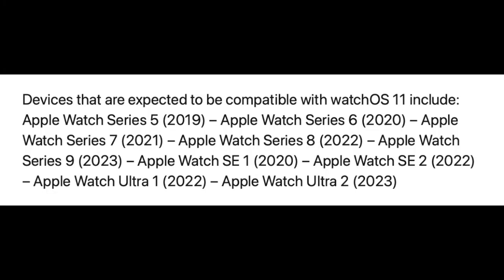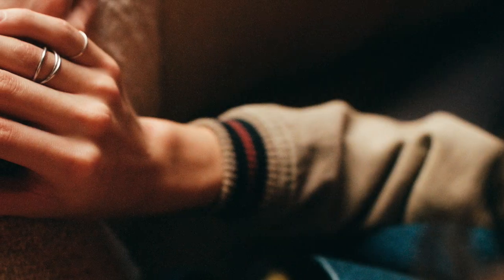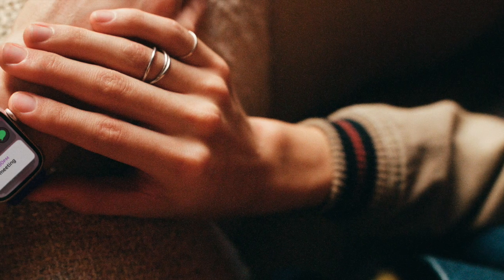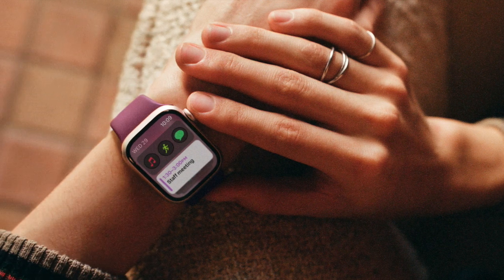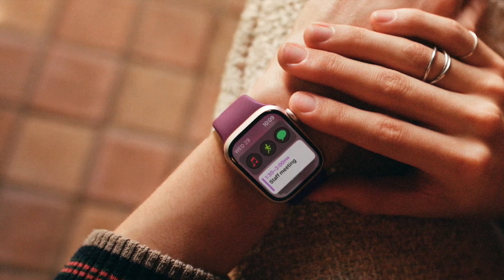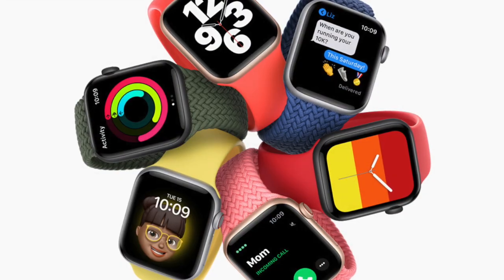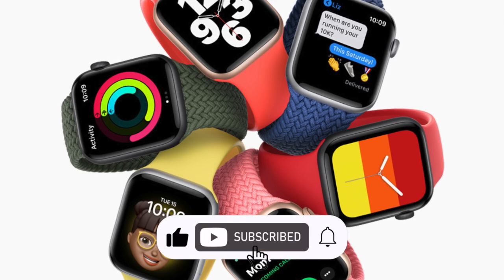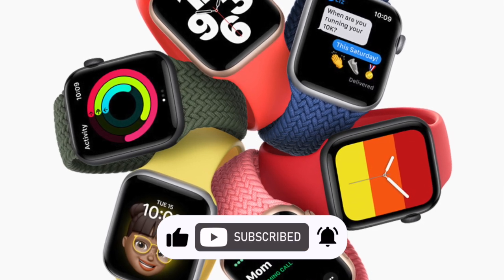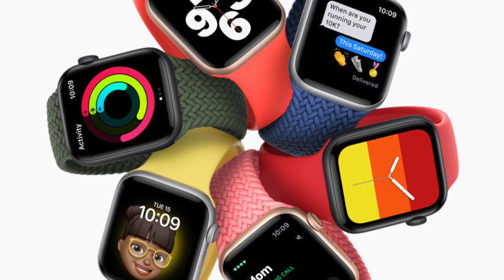On the screen, you can see the devices that we expect to be compatible with watchOS 11. They include pretty much everything since Apple Watch Series 5. As a reminder, installing early software versions carries risk, like bugs and other problems. Apple encourages you to report any issues you come across. The other option is to wait for the public release of the software, which should occur probably in September.